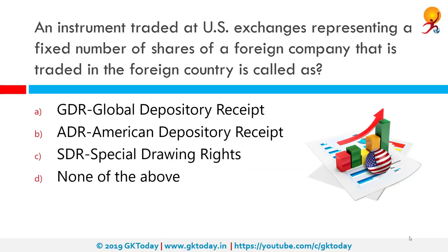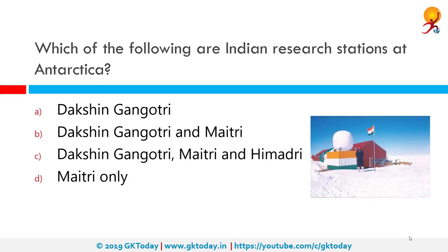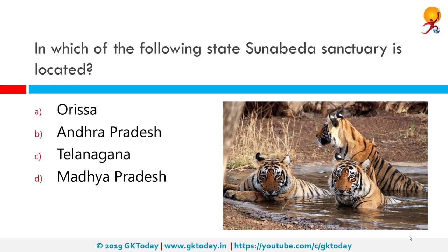An instrument traded at US exchanges representing a fixed number of shares of a foreign company is called an American Depository Receipt. An ADR is a negotiable security that represents securities of a company that trades in the US financial market. Which of the following are Indian research stations in Antarctica? The correct answer is Dakshin Gangotri and Maitri. Himadri is actually in the Arctic, not Antarctica.